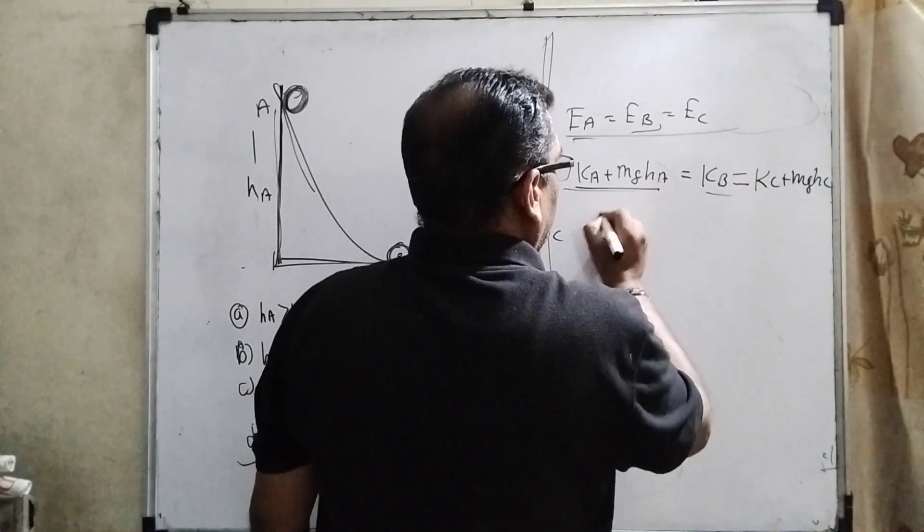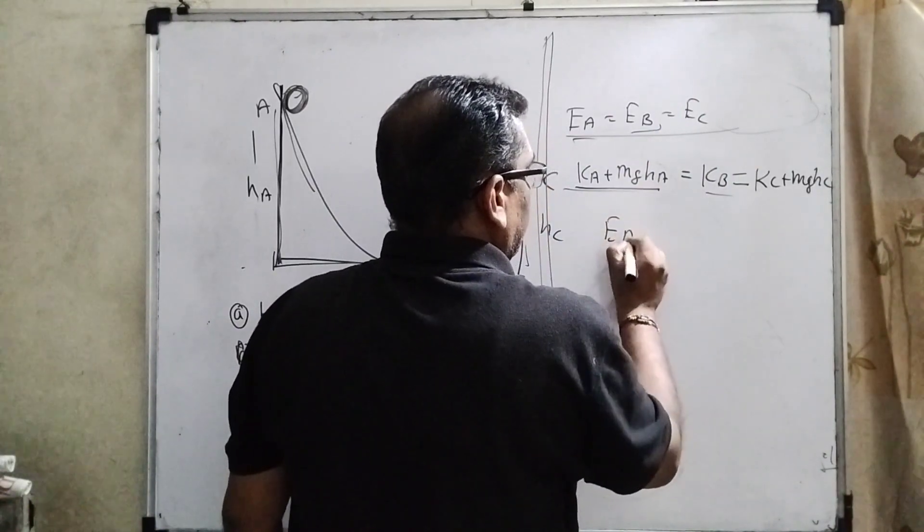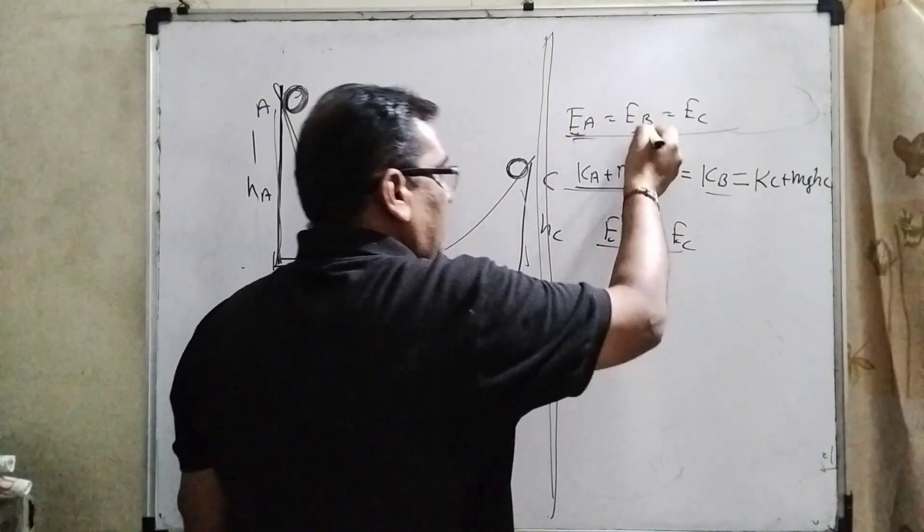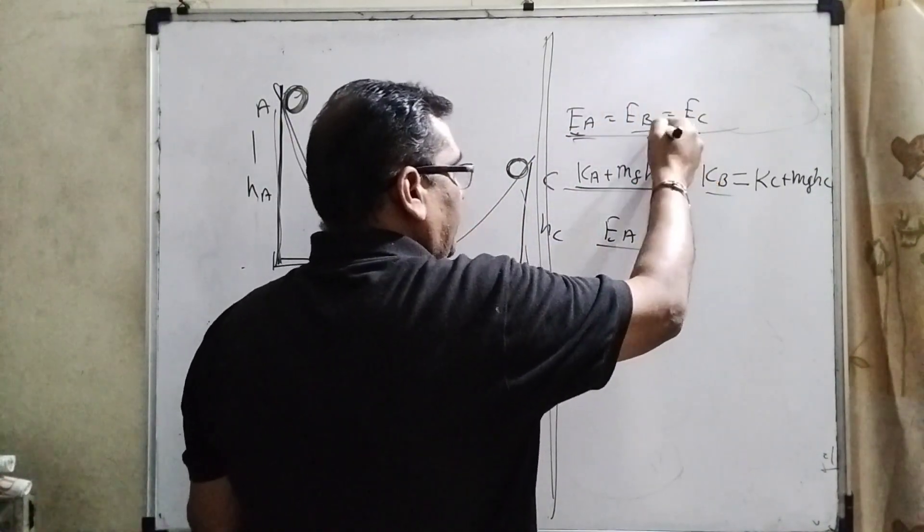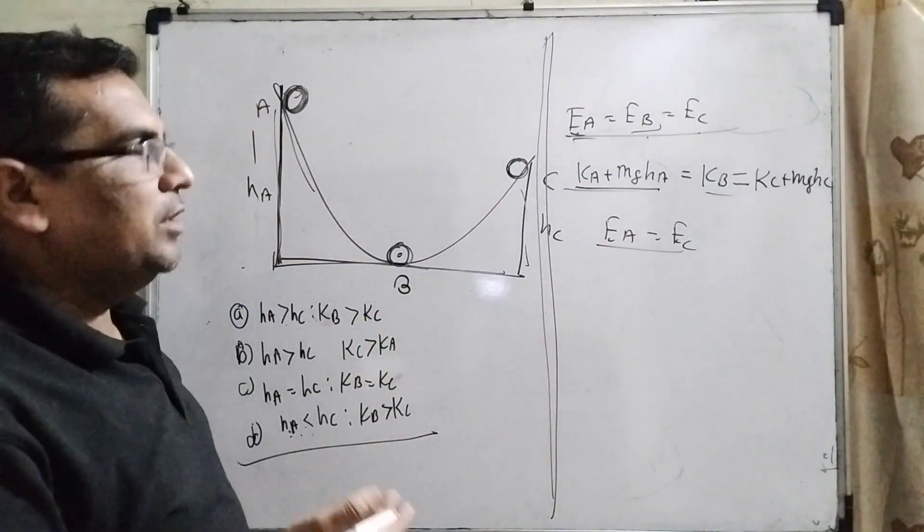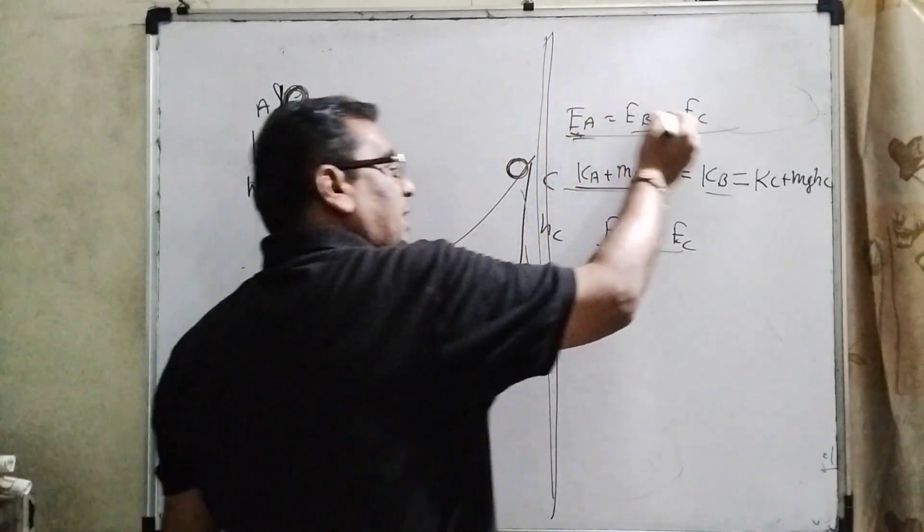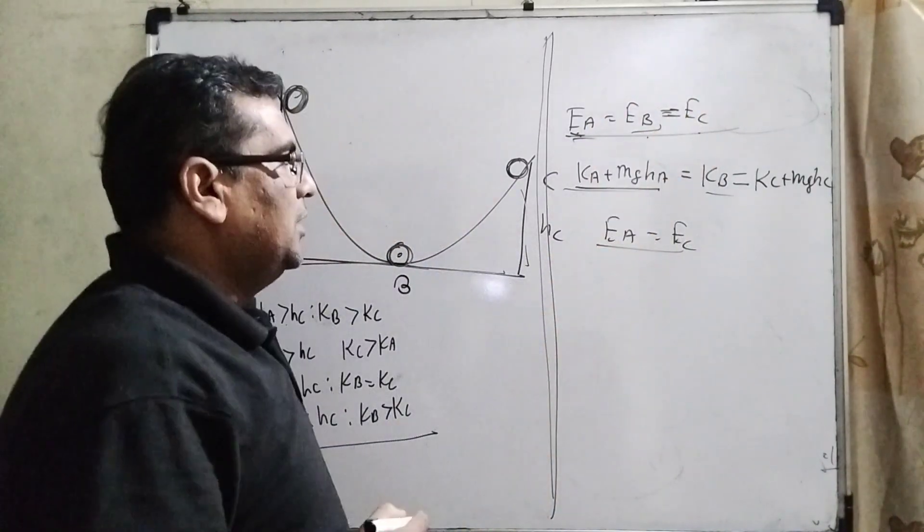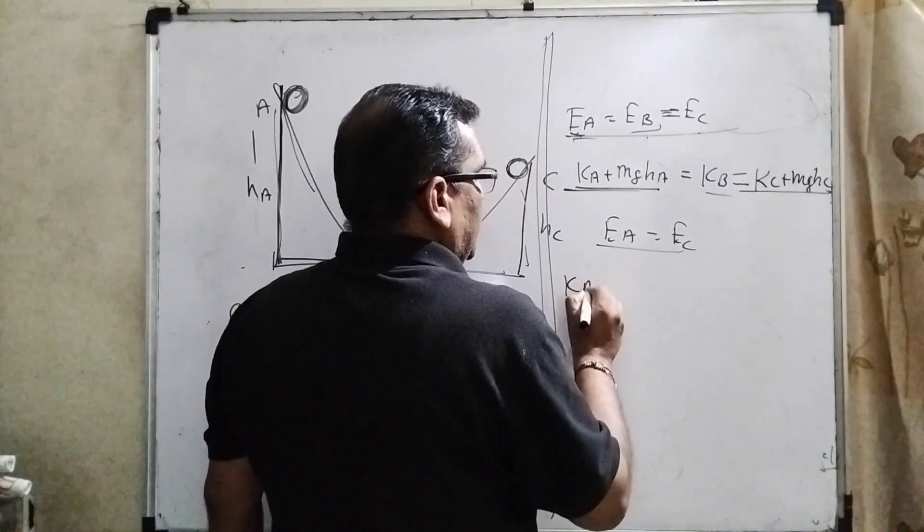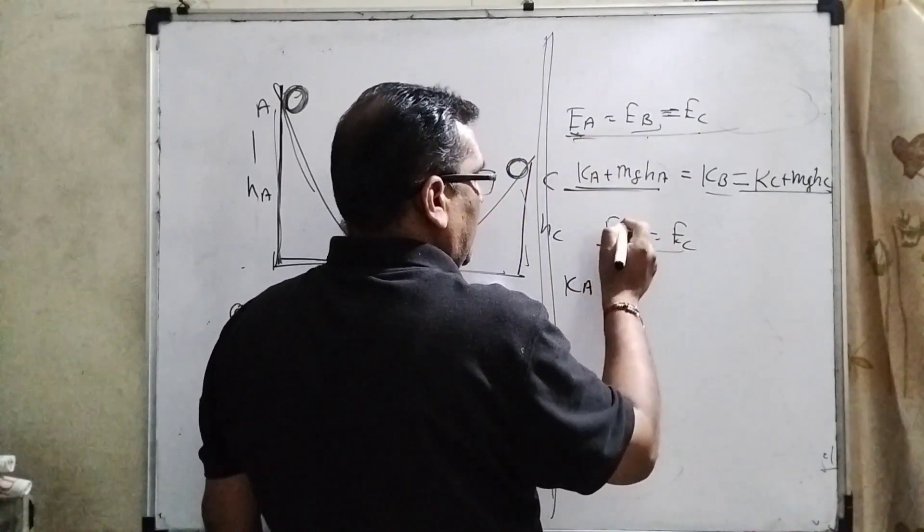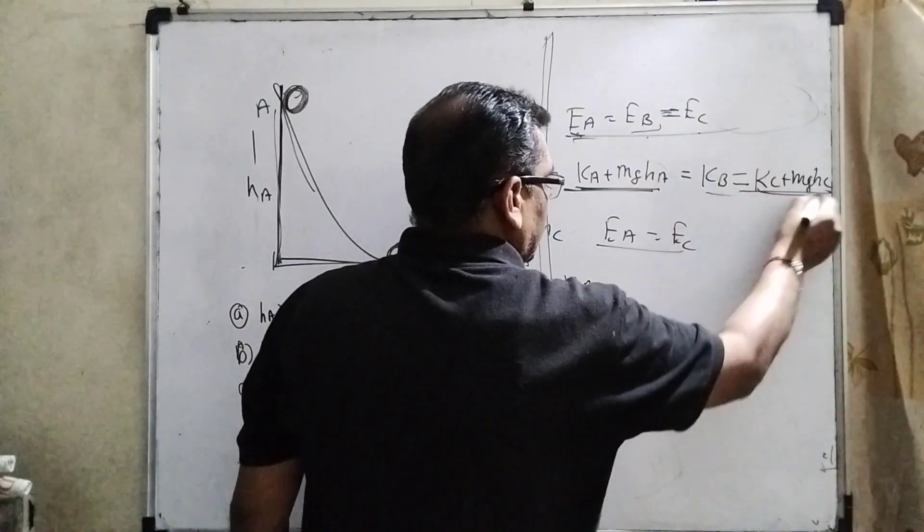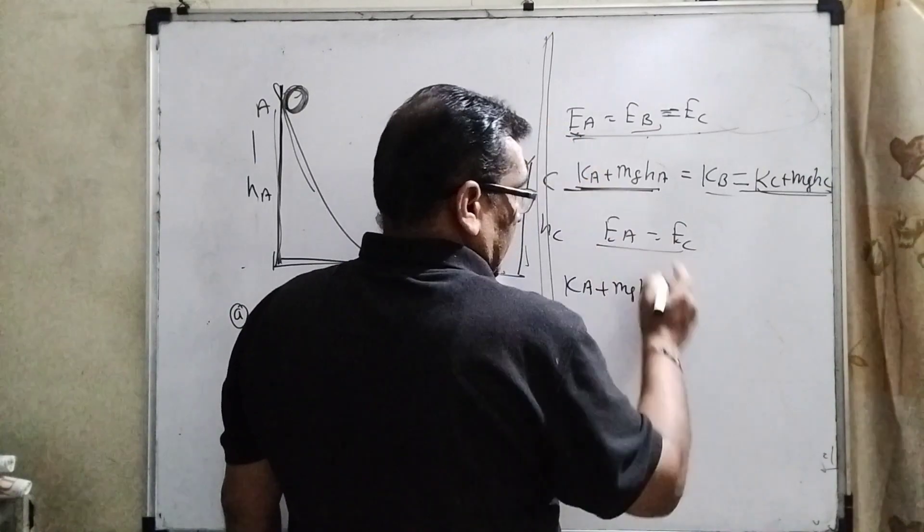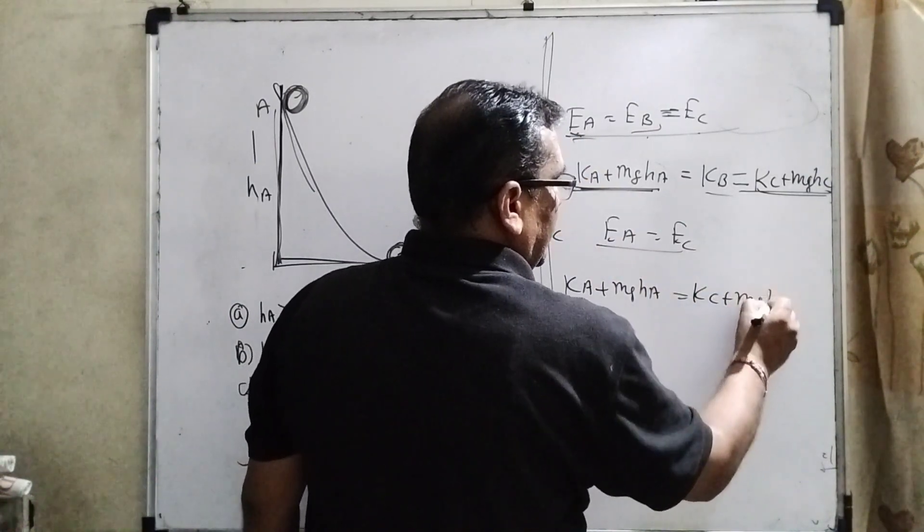Let us first take EA and EC. We can equalize them because they are all equal to each other. So therefore, EA equals EC. So here we take total energy of A and total energy of C.